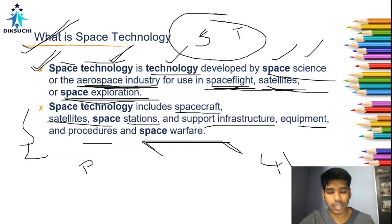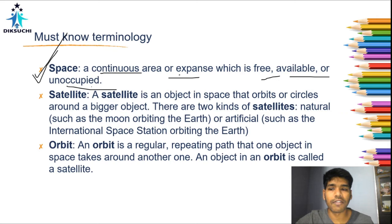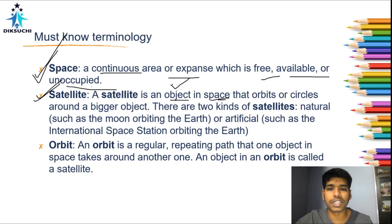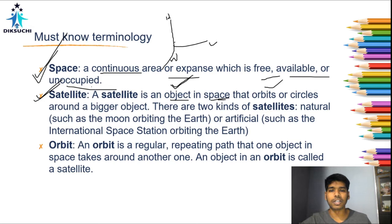The first must-know terminology: Space is a continuous area or expanse which is free, available, or unoccupied. A satellite is an object in space that orbits or circles around a bigger object. The space is four-dimensional in structure — we live in a three-dimensional world of length, height, and width, but space includes a fourth dimension: time.